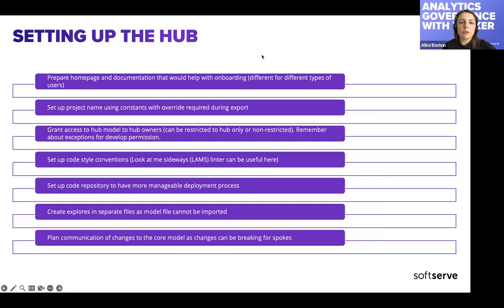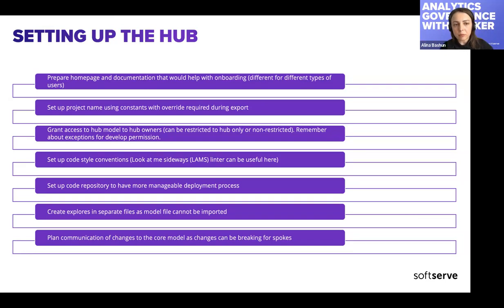For setting up the hub project in Looker — there can be many cases, as Looker is quite flexible. It can be a single hub project with one model, several hub projects, or a hub project with several models. It all depends on the prerequisite analysis you've done. What you need to do: set up a project in Looker, and let's imagine there's just one core model in it — you would need to grant access to this model to hub owners.